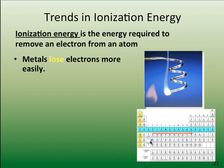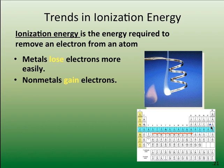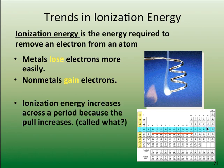If the electrons are on the metallic side of the periodic table, electrons are going to lose electrons more easily because the attractive force is less. Nonmetals, again, tend to gain electrons.